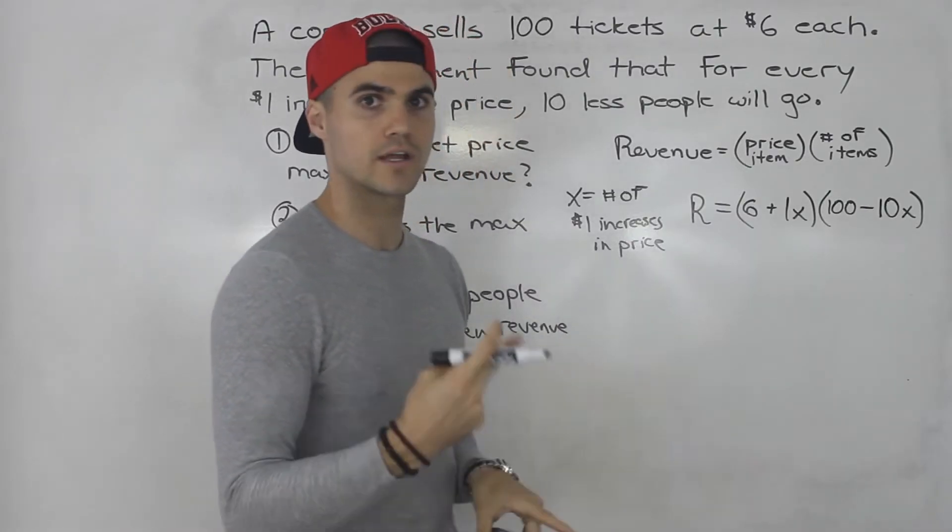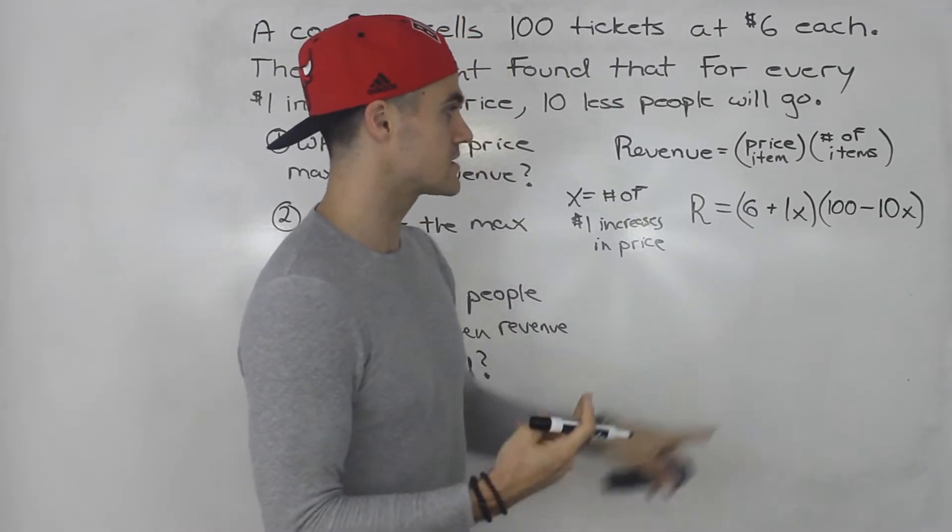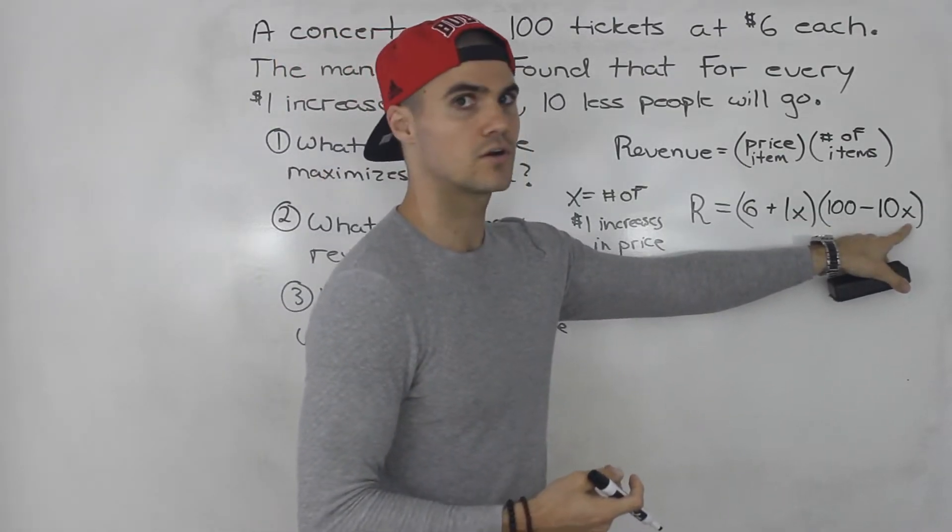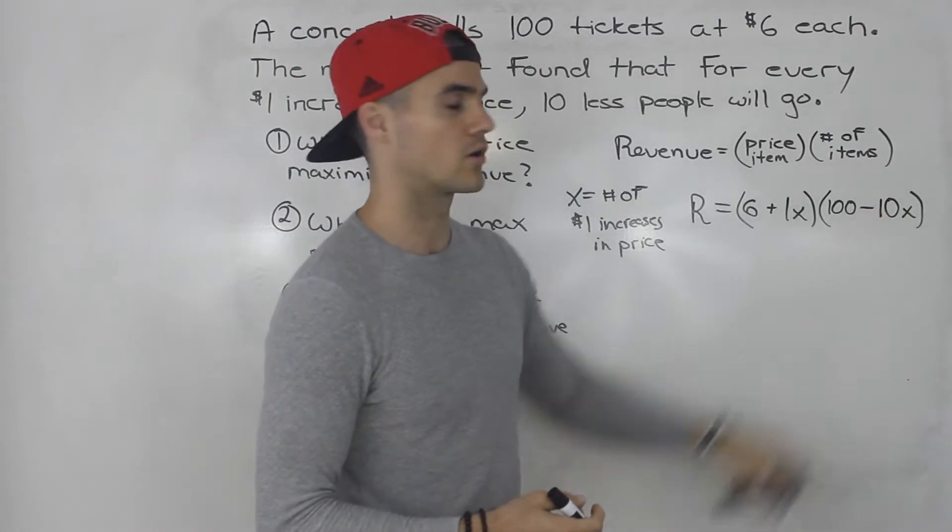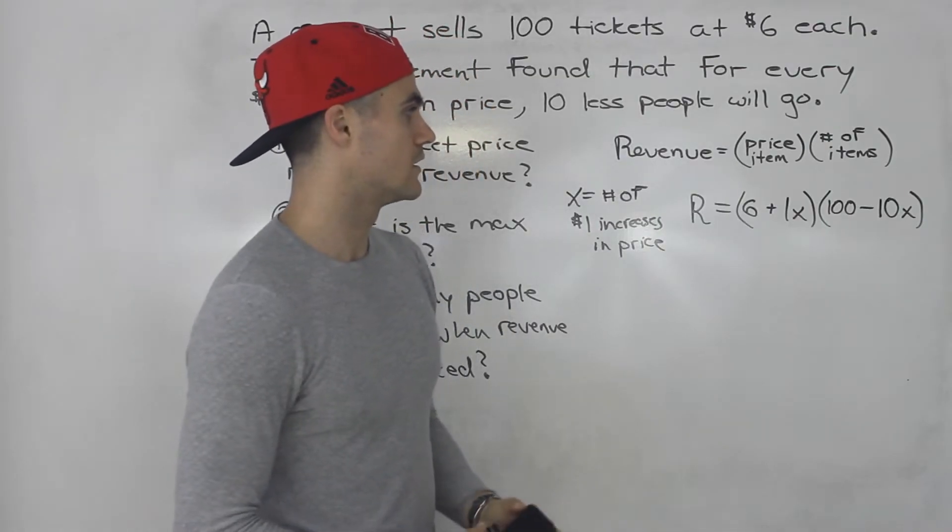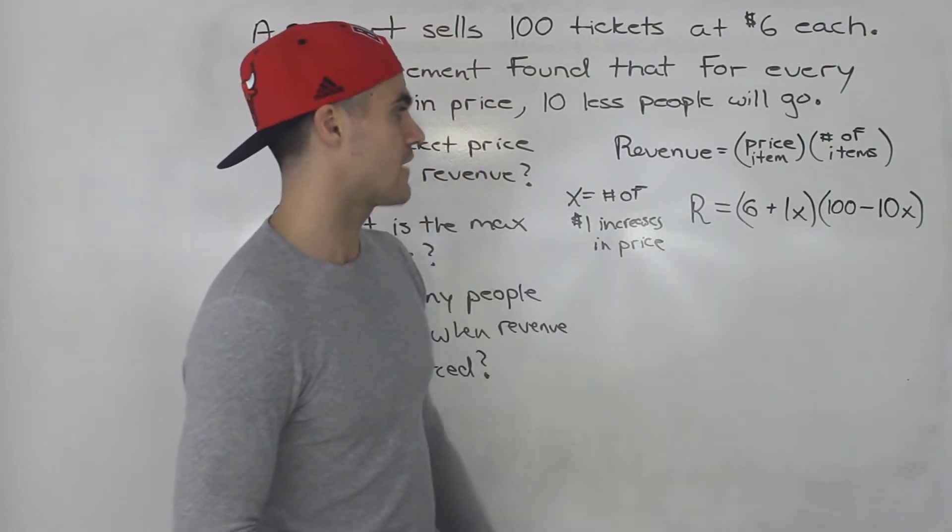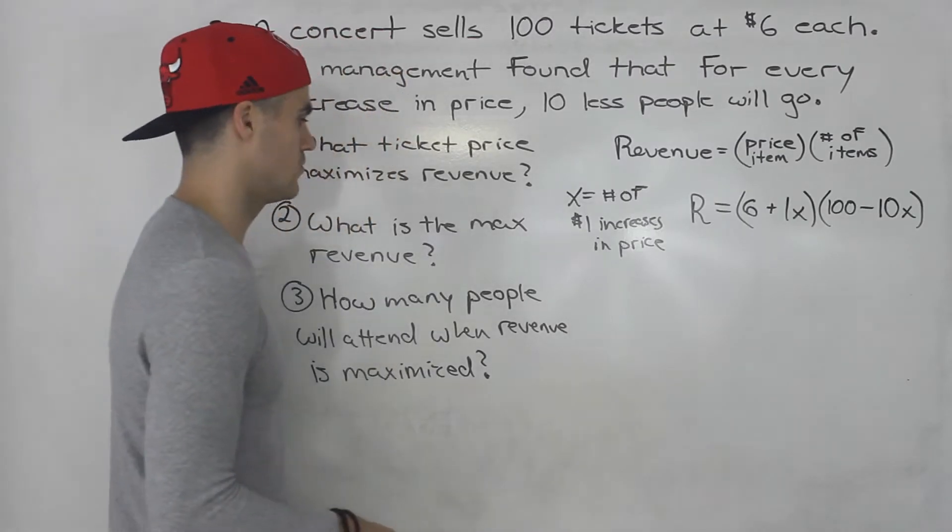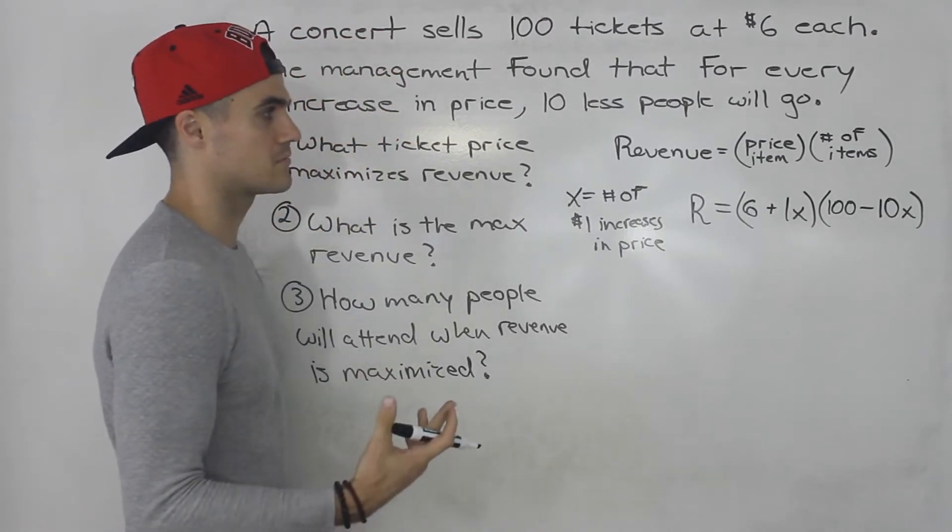If x is 2, if we're going to increase the price twice, so by $2, then x is going to be 2 here. It means 20 less people are going to go. So right now, we have a revenue function here. And now we can find out what's the maximum revenue.